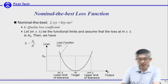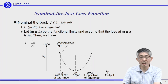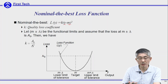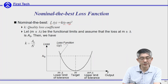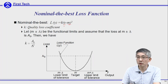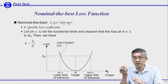The first one is called nominal-the-best. Using a quadratic function, the bottom of the quadratic function is right at the target. The equation is K multiplied by (Y − M)², where M is the target and Y is the performance. Anything away from the target will cause some loss. Here K is called the quality loss coefficient.